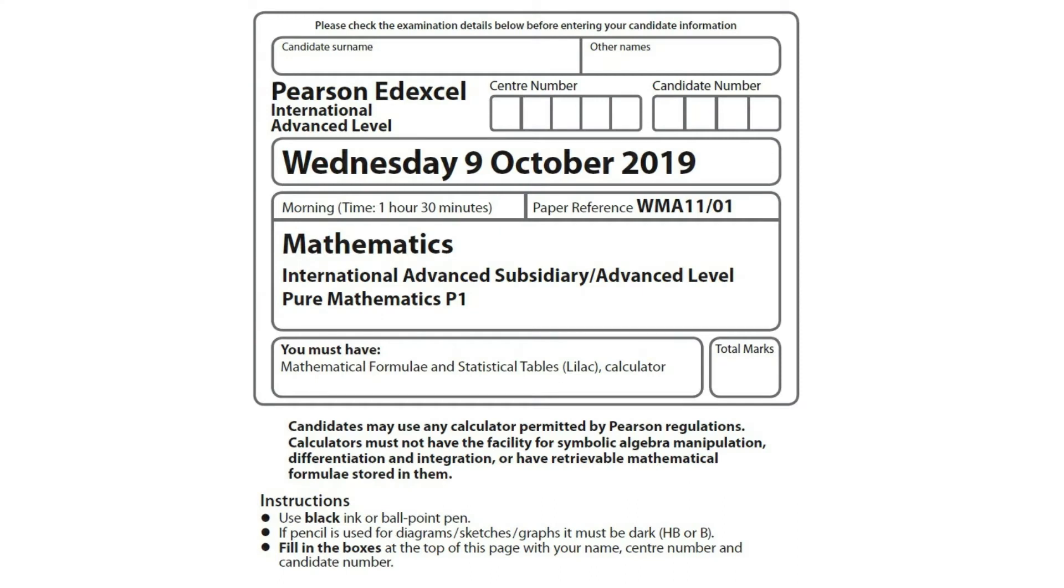Today we'll be looking at October 2019 pure math 1 paper. This paper has 11 questions and total marks is 75.